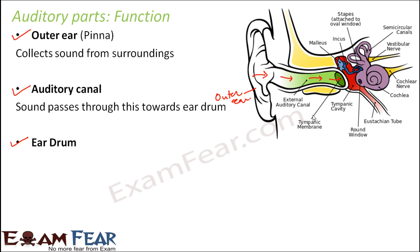The eardrum is a membrane, much like the stretched membrane of musical instruments such as the dholak and tabla, which vibrate when struck. In the same way, as sound waves reach the eardrum, it starts to vibrate. These vibrations are carried from the eardrum deeper into the inner ear. The eardrum plays a very important role in hearing and therefore needs a lot of protection. We can say the vibrating part of the human ear is the eardrum, which is like a stretched membrane.